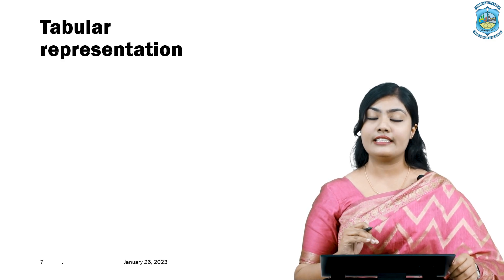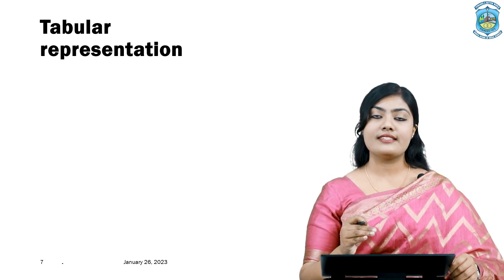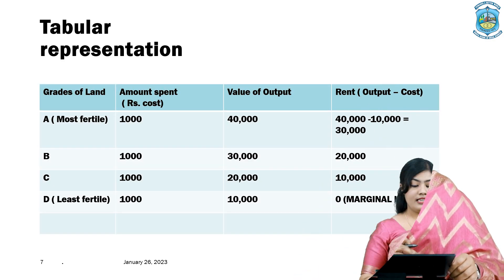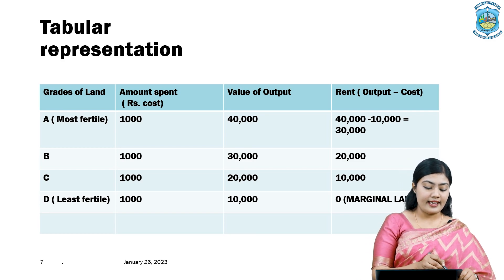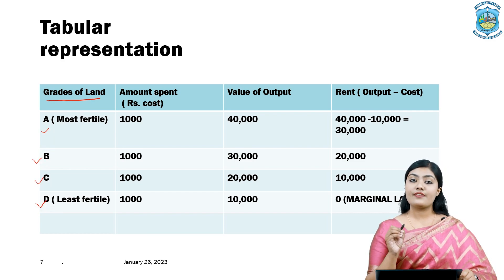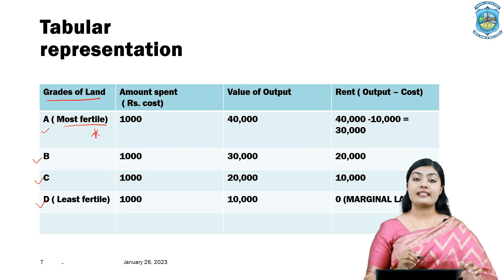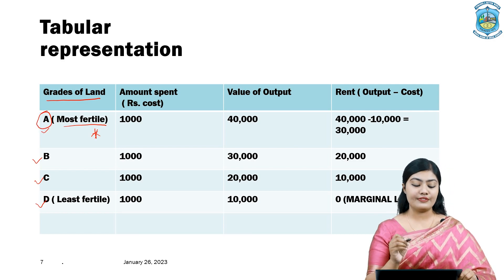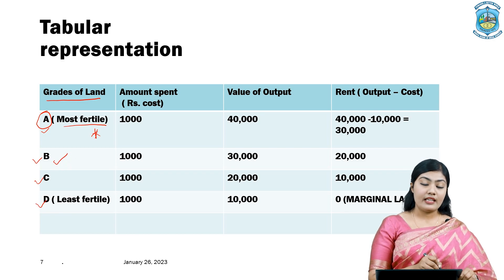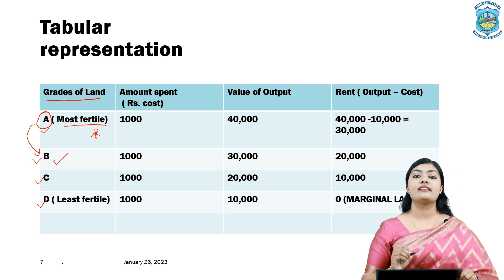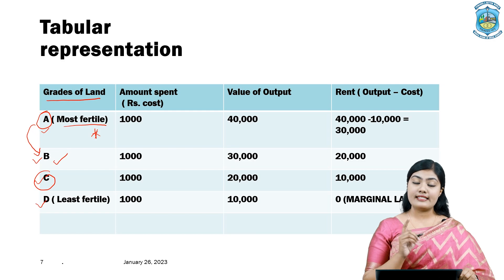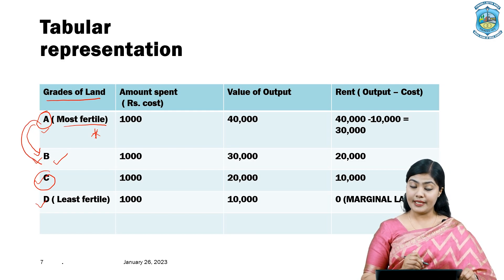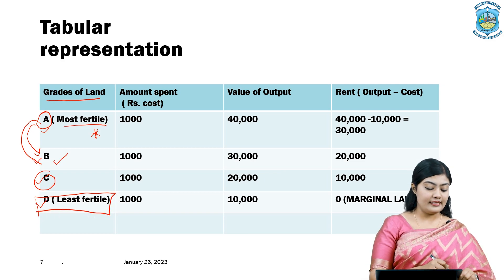Now let us understand this in a tabular representation, after which we will plot it on a graph. On screen, you can see different grades of land: A, B, C, and D. As per the assumption, the most fertile land — A — is used first, then B, then C, and D is the least fertile. The amount spent on each grade is the same: one thousand each. Regarding the value of output, grade A being the most fertile has an output of 40,000; grade B has 30,000; C has 20,000; and D, the least fertile, has an output of 10,000 units.